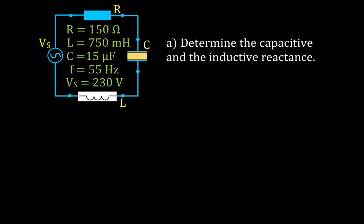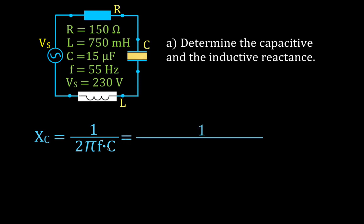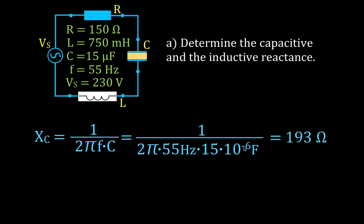Here is the information we were given. In the first section we're going to determine the capacitive and inductive reactance. The capacitive reactance equals one over two pi times frequency times capacitance. Plugging in our values — two pi, 55 hertz, and 15 times 10 to the minus six farads — we get a capacitive reactance of 193 ohms.